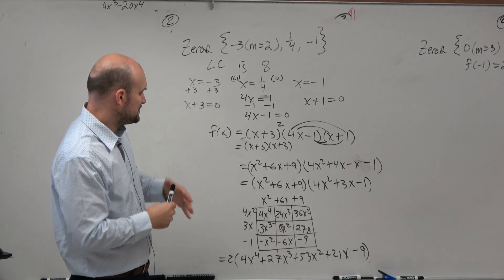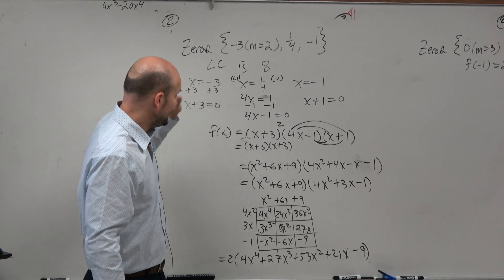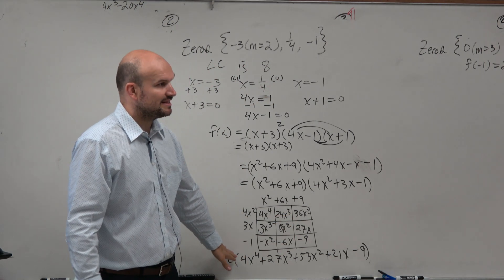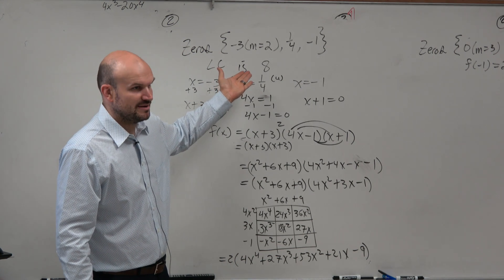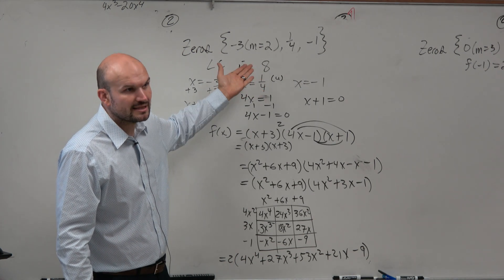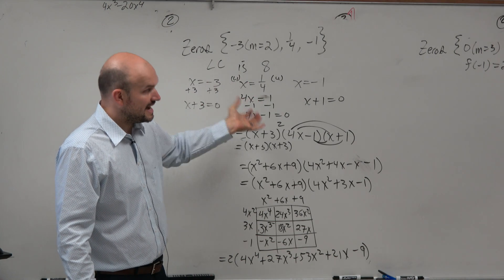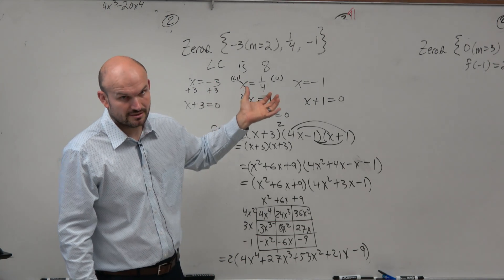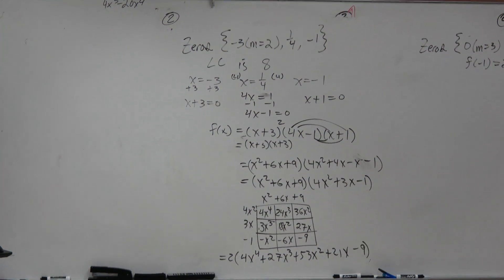Basically, when they tell you what the leading coefficient is, if you multiply everything out and you don't have that leading coefficient, you just need to determine what scalar you need to reach it. The scalar is not going to impact the zero values, though. That was fun.